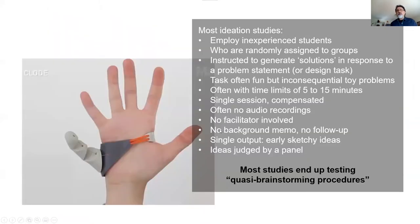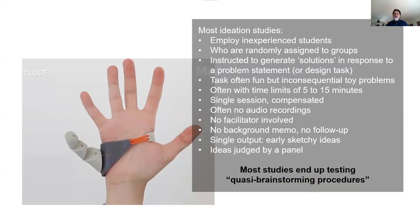When you look at the first part of the paper and see the key guidelines that Osborne suggested for brainstorming, and you compare that to ideation studies that have been carried out since then, this is a list of things that go against those basic principles. Many ideation studies employ inexperienced students, and these participants are randomly assigned to teams.